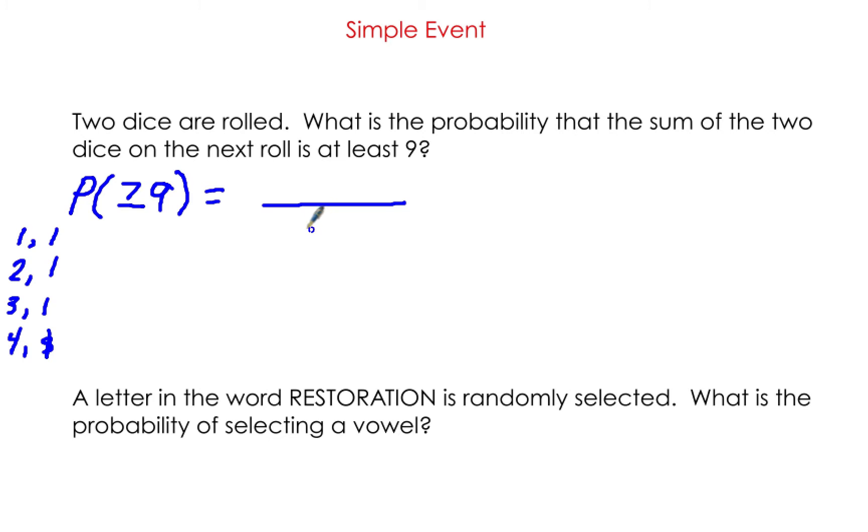How many of those combinations have a sum greater than or equal to 9? You have 4 and 5, 4 and 6, 3 and 6, 5 and 6, and things like that. If you add all those up, you get 10.